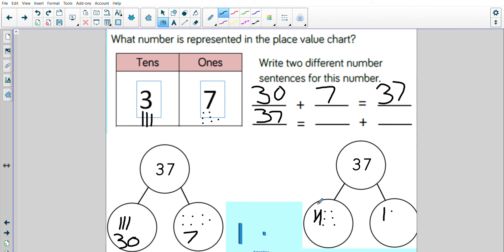This side has 10, 20, 21, 22, 23, 24, 25, 26. This side has 10 and 1, that makes the number 11. That means that 26 add 11 must make 37.